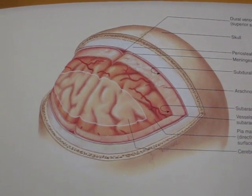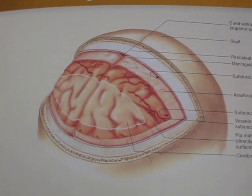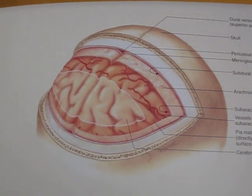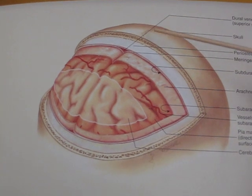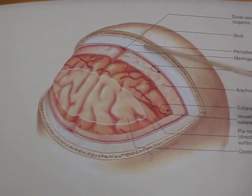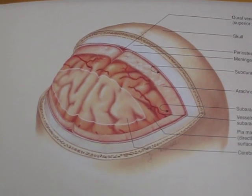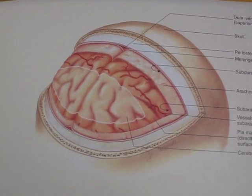Now we're going to go over the coverings of the brain and blood supply. These are the coverings of the brain, and we're just going to do this on a picture.